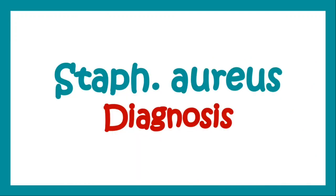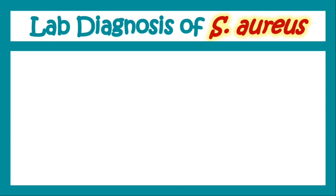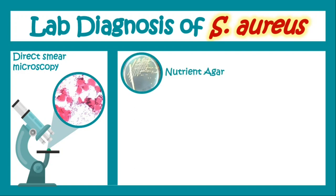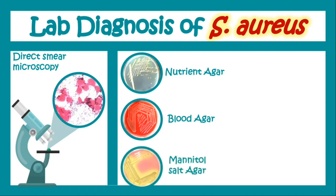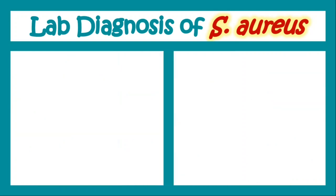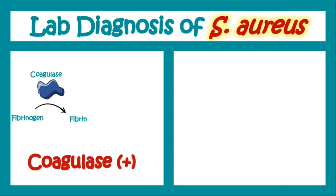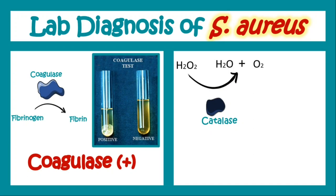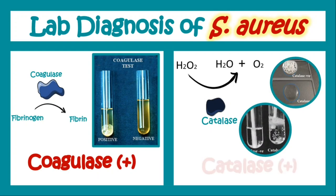Now let us understand how we diagnose Staphylococcus aureus. Diagnosis involves multiple steps. We start with a direct smear microscopy in which we take the sample aseptically, smear it on a slide, stain it with gram stain, and see under the microscope, where we can see gram-positive cocci in clusters along with epithelial cells. We can also smear the sample on agar and produce cultures on nutrient agar, blood agar, or mannitol salt agar. From the culture plates, we can perform culture smear microscopy, again seeing gram-positive cocci in clusters. We also perform biochemical tests involving coagulase, which converts fibrinogen into fibrin, showing coagulase positivity for Staphylococcus aureus. We can also perform a catalase test, where the catalase enzyme converts H2O2 into H2O and O2, causing bubbling in the test, representing catalase positivity.